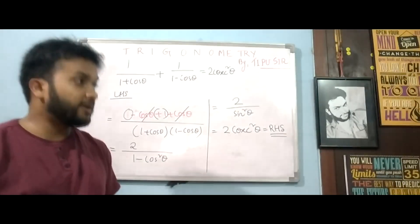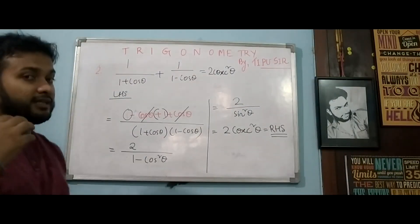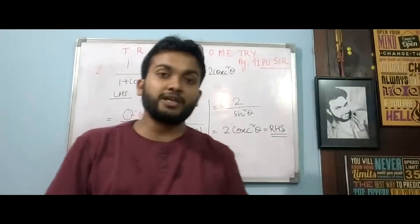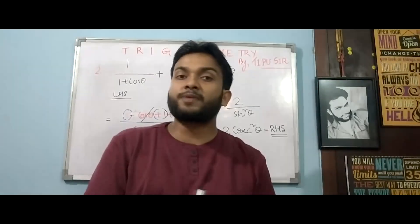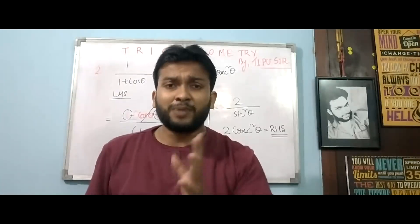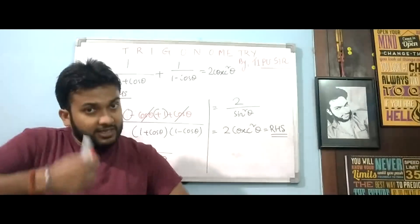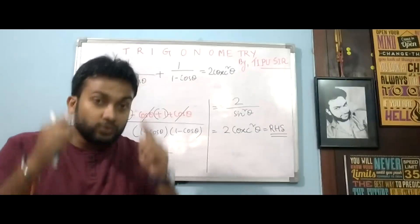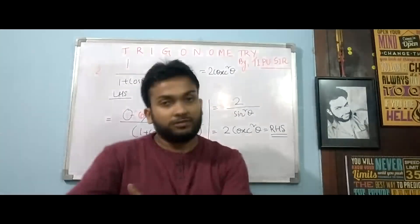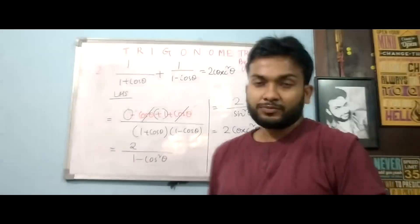To do trigonometry, you need to know all the formulas or how to derive them. The second thing is that in maths, approach is necessary. Blind practice — doing 1000, 2000, 5000, 10,000 sums — is of no use without understanding. You need to build a mind map: if I get this type of sum, I'll solve it this way. Only then will it help you.